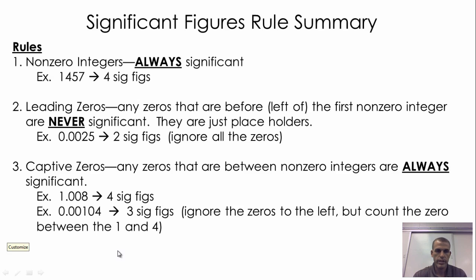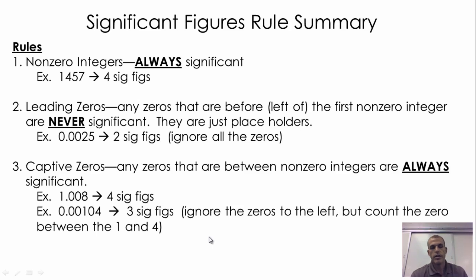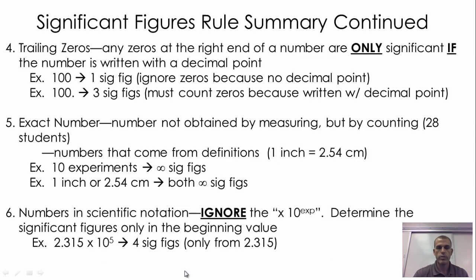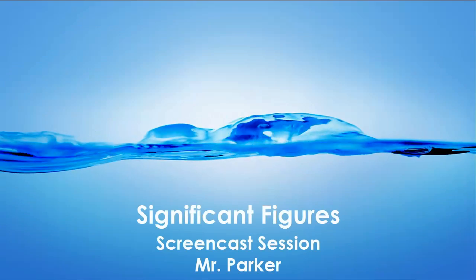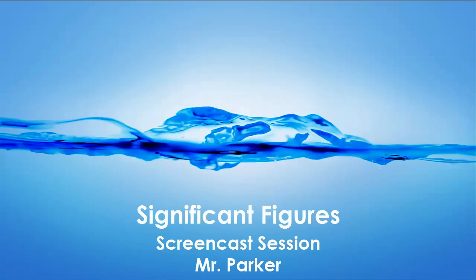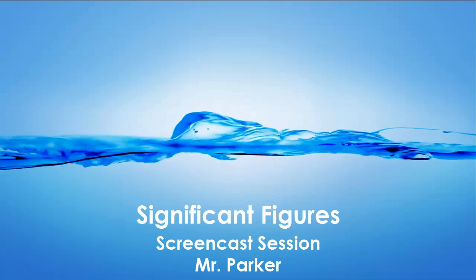To summarize: these are the six rules with quick examples — definitely put these in your notes and keep practicing so you get confident counting significant digits. The first three rules cover identifying significant digits, the last three cover edge cases, and then we covered addition/subtraction and multiplication/division. This screencast session covers significant figures, and we'll do more practice in class. We'll see you next time.